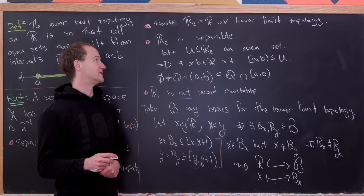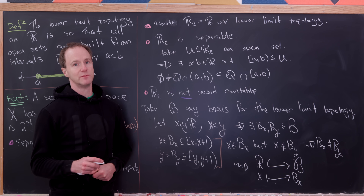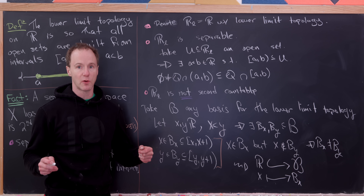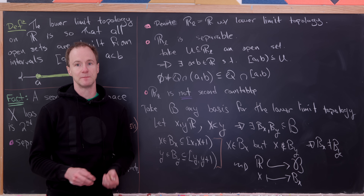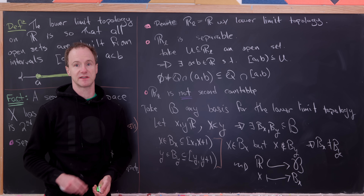Since R_l is separable but not second countable, by our fact it cannot have a metric. That means there's no good notion of distance between two points in the lower limit topology, and that's a good place to stop.